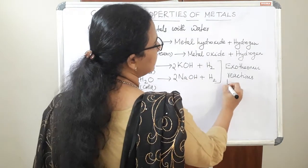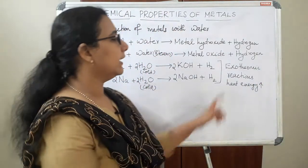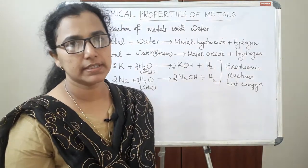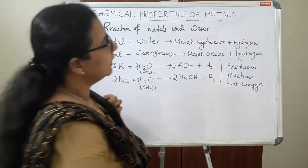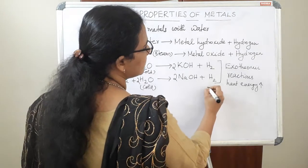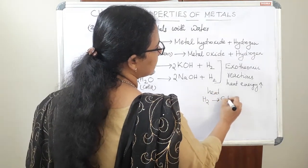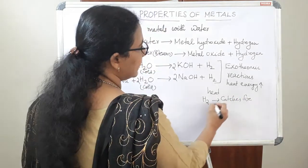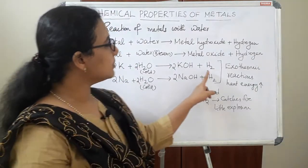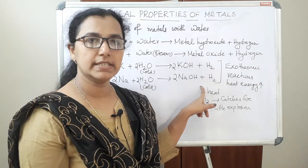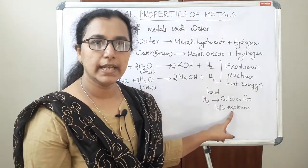In these two cases, a lot of heat energy is released, so we call it an exothermic reaction. Because a lot of heat energy is released, the hydrogen gas evolved will catch fire, and we can expect a little explosion in these two cases. The heat energy produced is sufficient to burn the hydrogen gas produced.